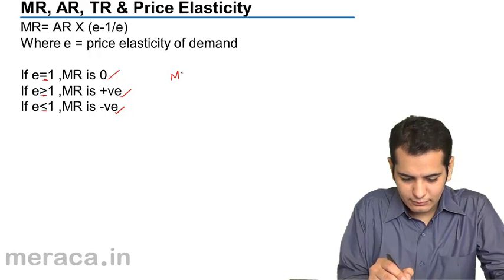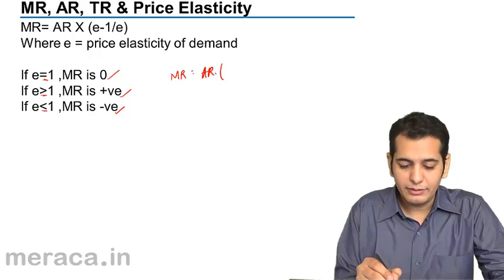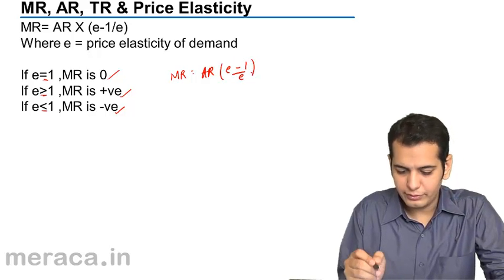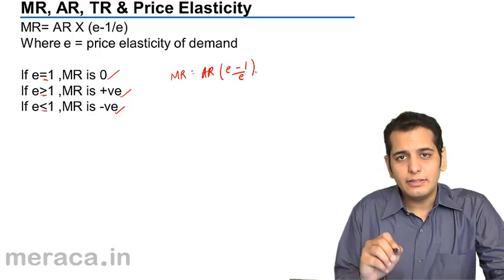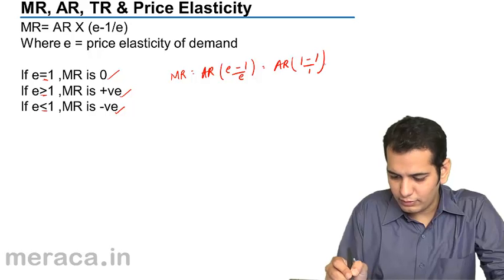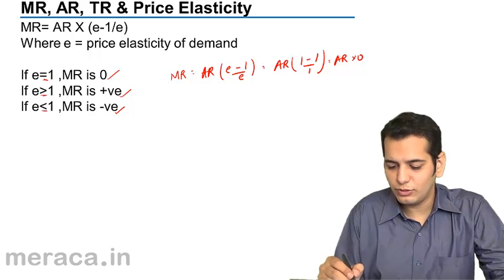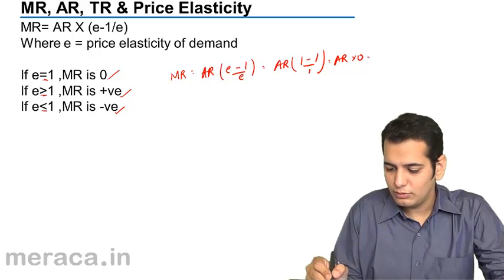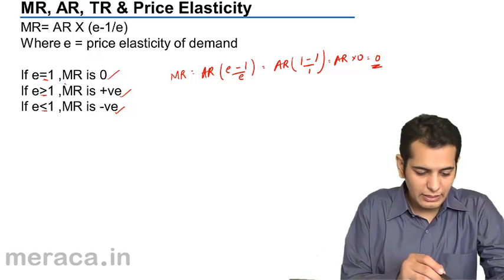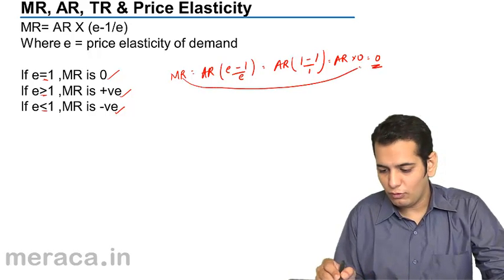We know that MR equals AR times (E minus 1) upon E. So when E is 1, this will be AR times (1 minus 1) upon 1, which will be AR times 0, because 1 minus 1 is 0. Zero divided by 1 will be 0. So AR times 0 will always give you the answer 0. We have seen that when E is 1, your marginal revenue will always be 0.